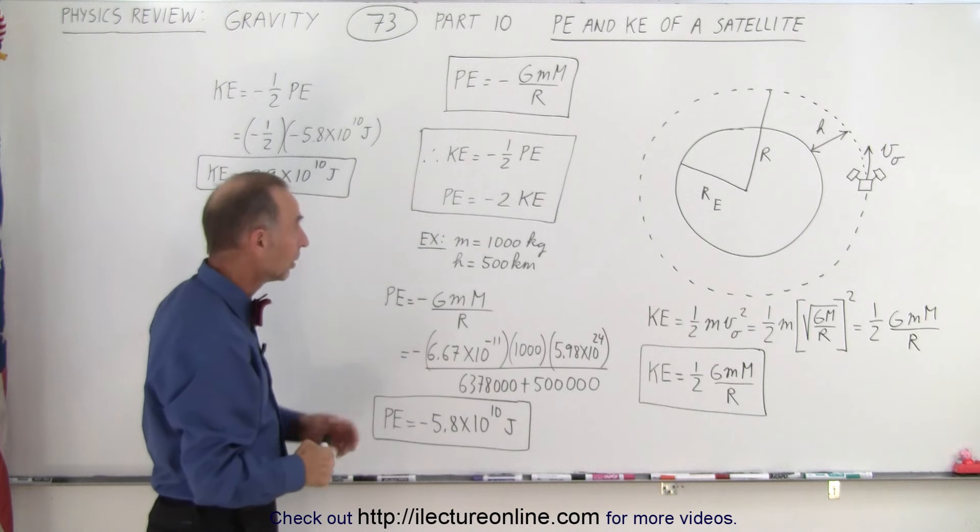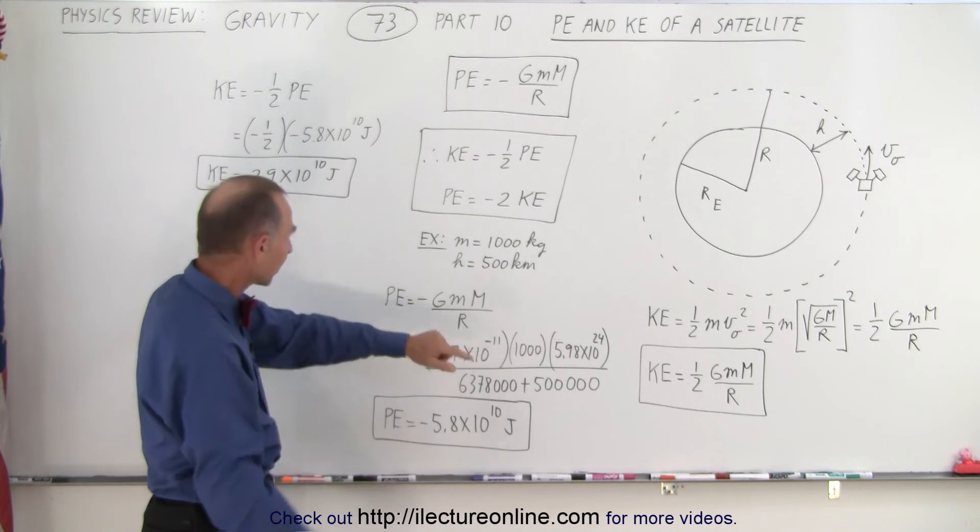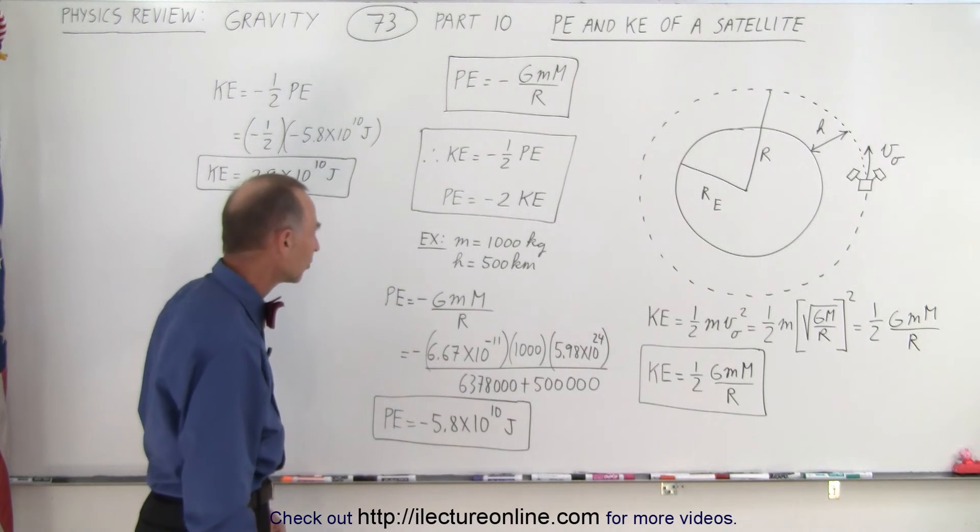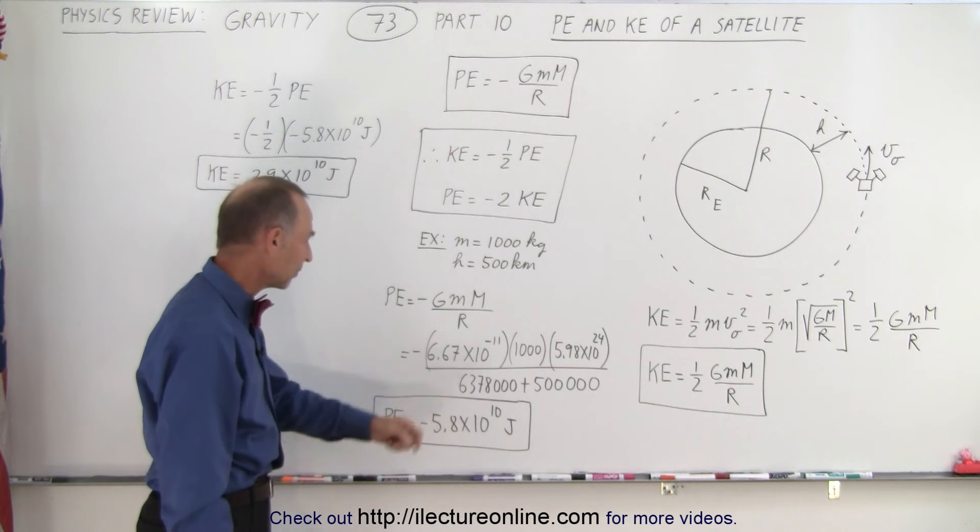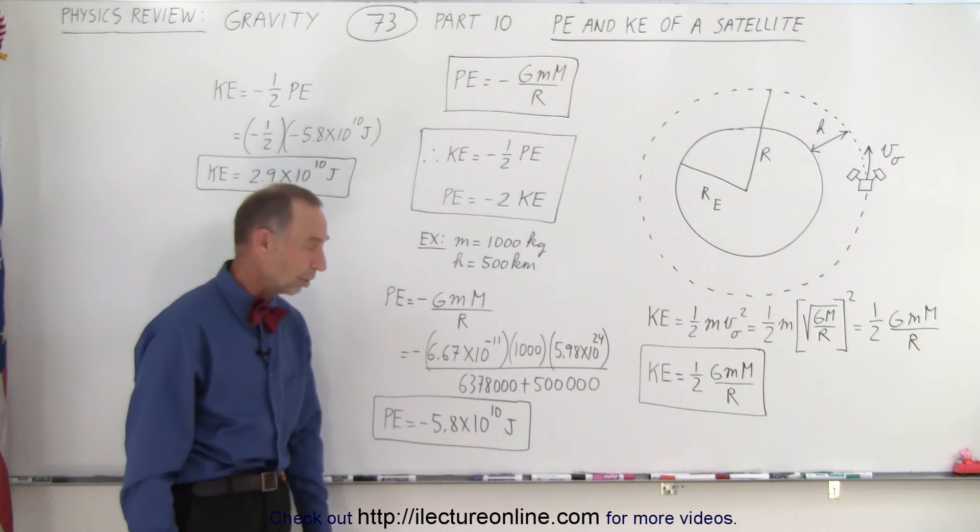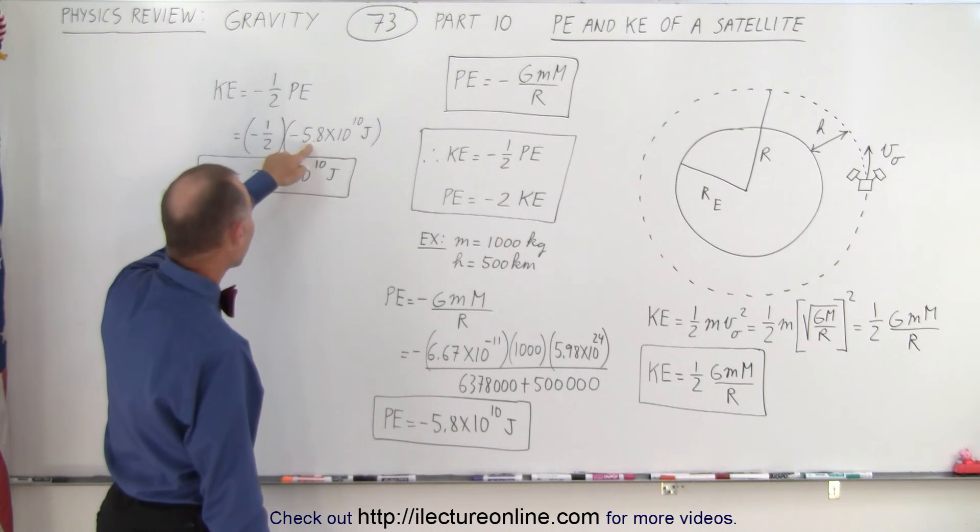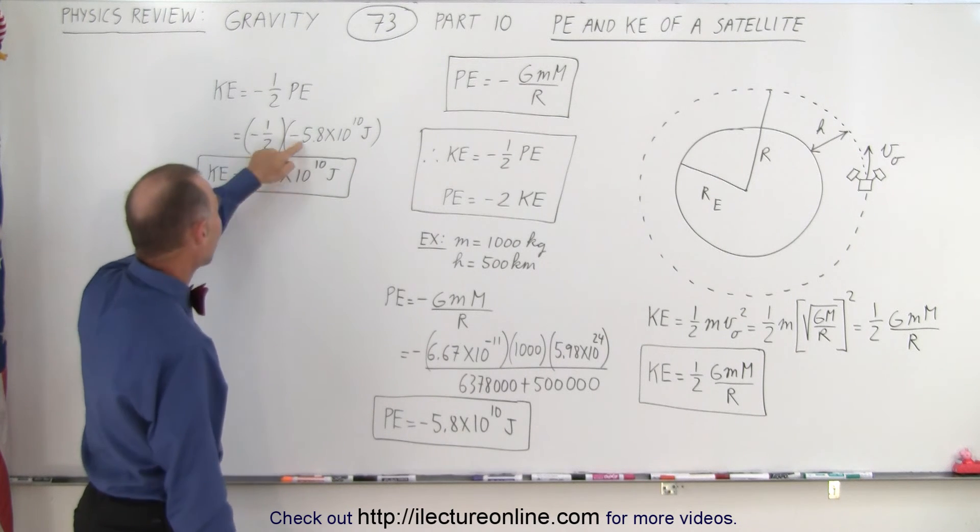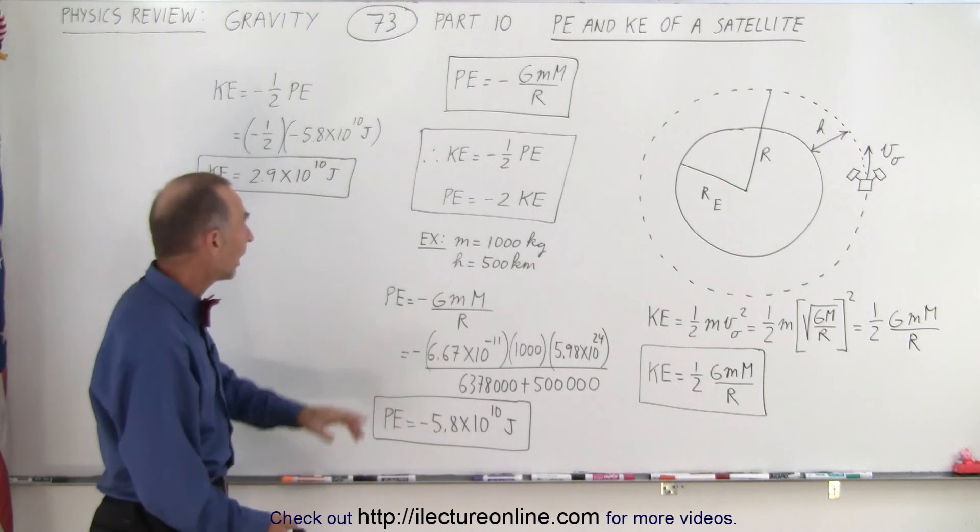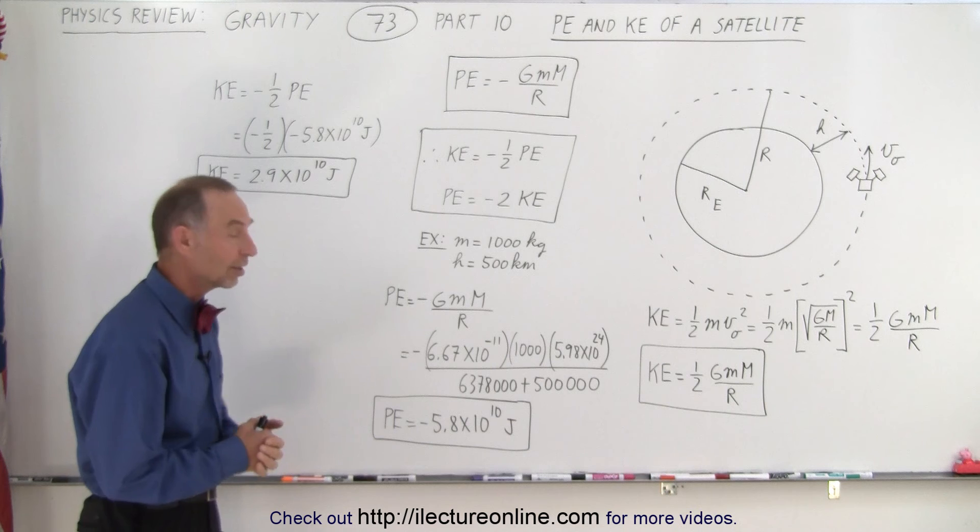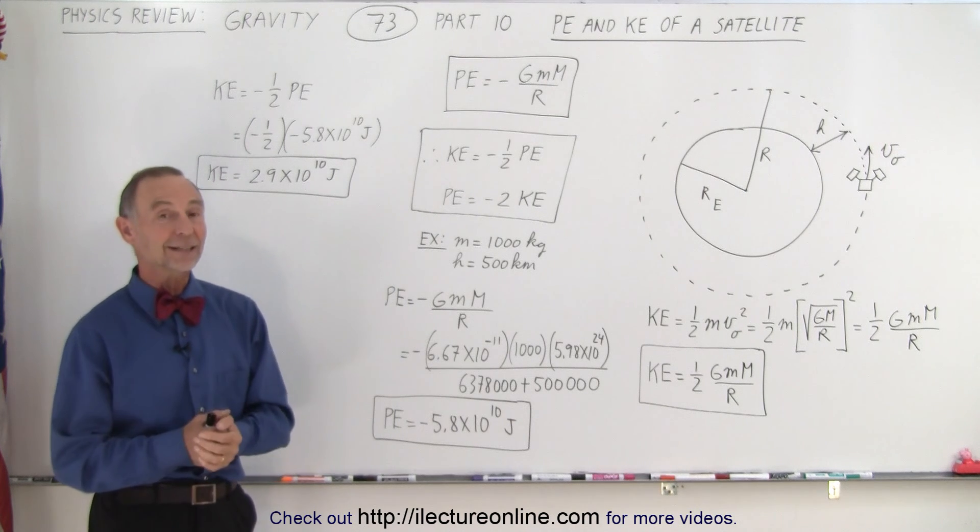So as an example, a thousand kilogram satellite, height above the surface is 500 kilometers, and so calculating the potential energy we end up with minus 5.8 times 10 to the 10 joules. That means that the kinetic energy is negative 1/2 times that, so that becomes positive, half of that is 2.9, so it's 2.9 times 10 to the 10 joules of kinetic energy, and negative 5.8 times 10 to the 10 joules of potential energy, and that is how those are calculated.